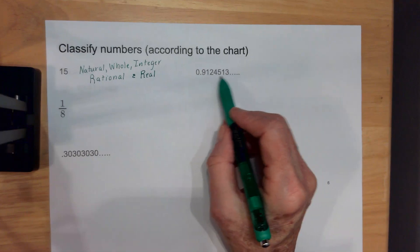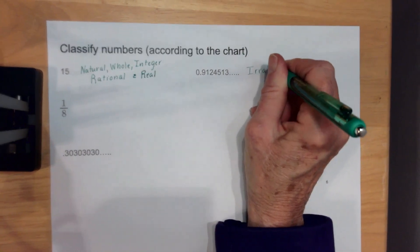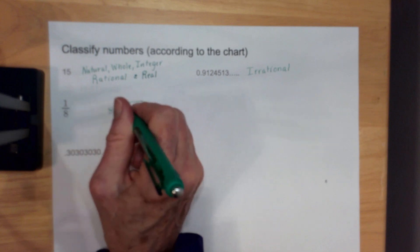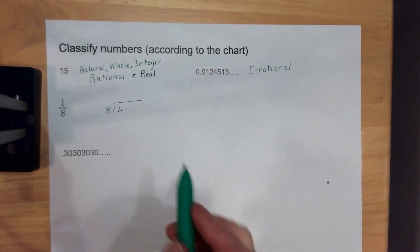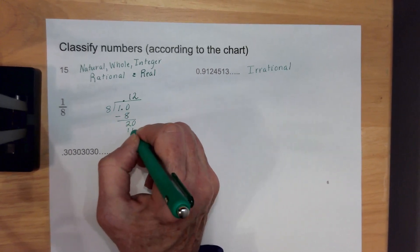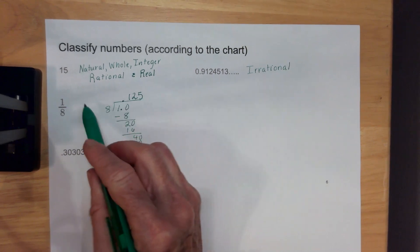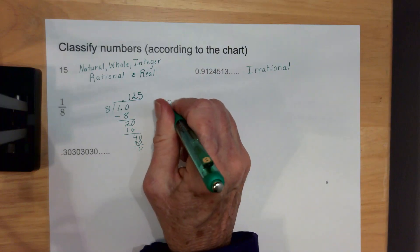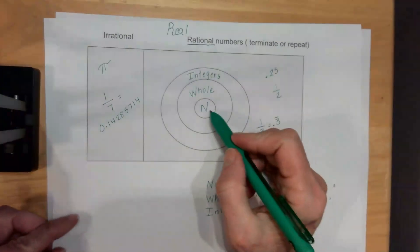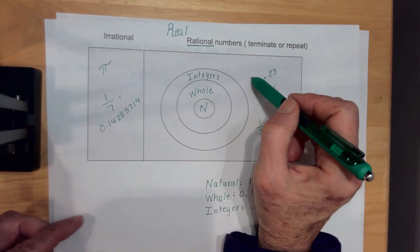If you notice this one has dot dot dot — I don't know what comes after the 3, there's no repeating part, so this is what we would call an irrational number. For one eighth, I would take 8 and divide it into 1 to make a decimal. It's going to go, come out even — one eighth is the same as 0.125, which makes this a rational, real number. It can't be natural, whole, or integer because it's not whole, but it falls out here which makes it rational.